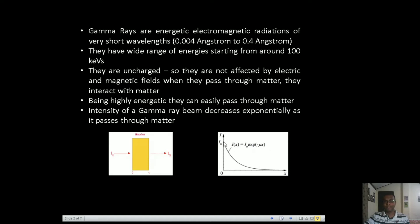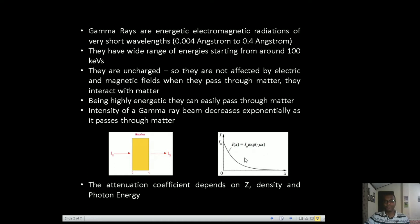What has been found is that the gamma ray intensity Iₓ after travelling through a distance x of the absorber is given by I₀ e to the power minus νx. The gamma ray intensity falls exponentially as it passes through matter. This ν is called the attenuation coefficient, representing how much the gamma ray intensity decreases with distance. It is dependent on the atomic number of the absorber material, its density, and the photon energy.